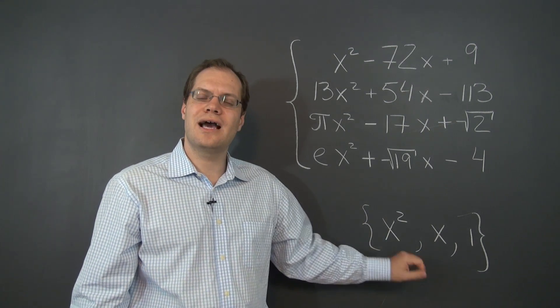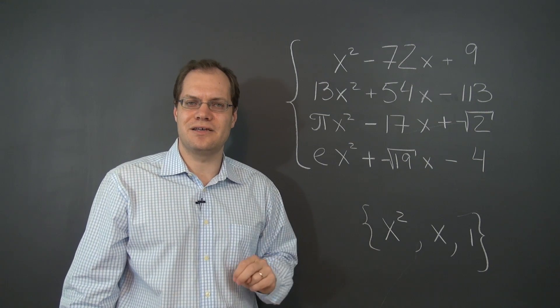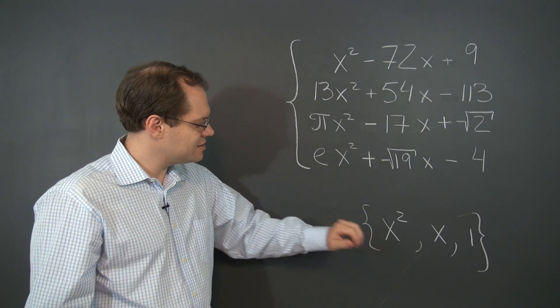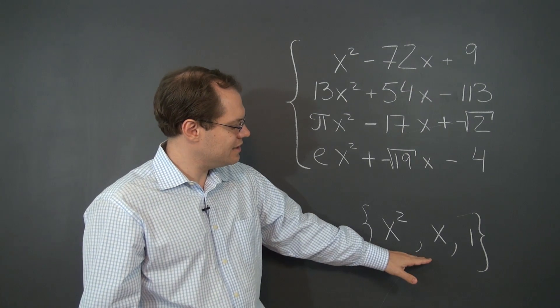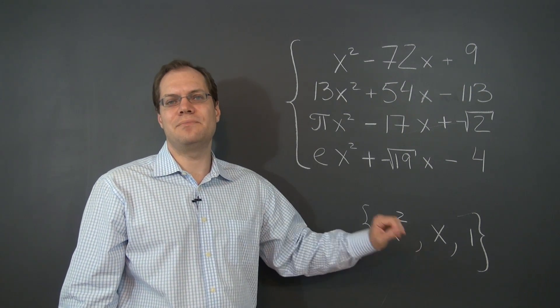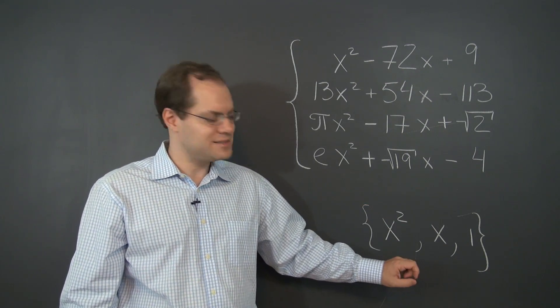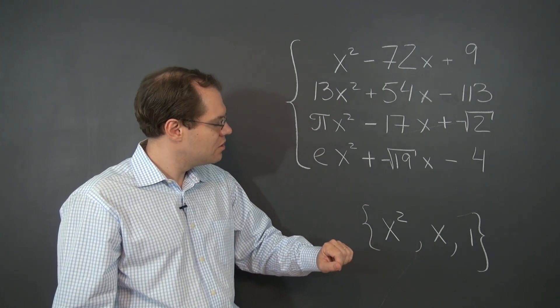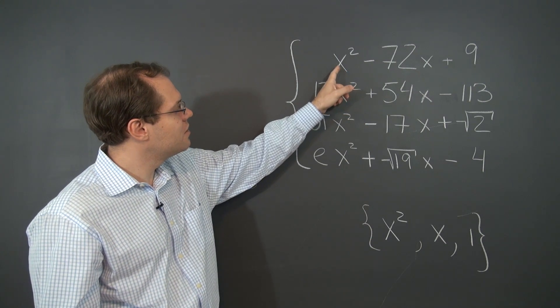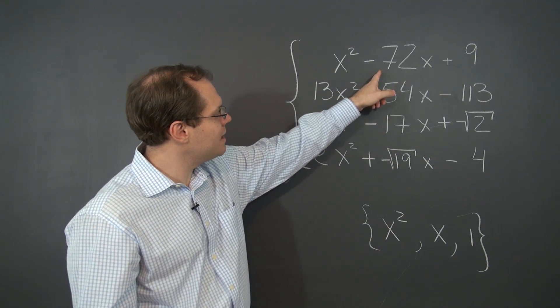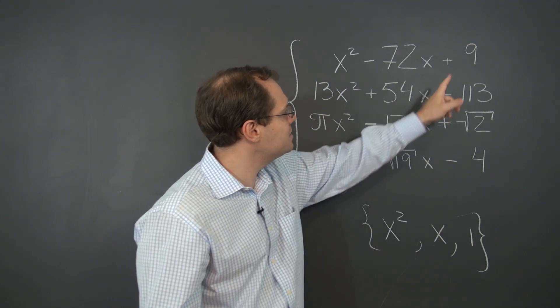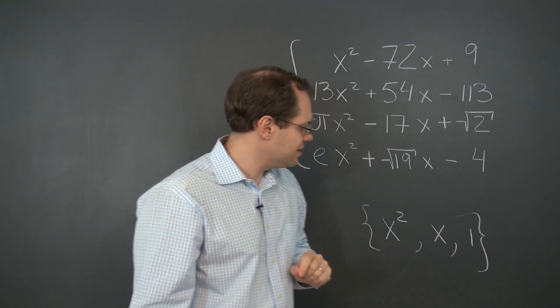But it's also a spanning set. That's the second thing you have to assert about your set of vectors. And yes, this is a spanning set because any other quadratic polynomial can be easily decomposed as a linear combination of these three. For example, taking this one, it would be 1 of this element minus 72 of this element plus 9 of this element.